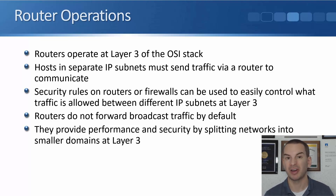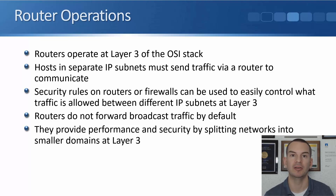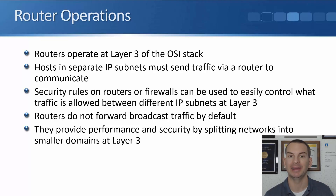Security rules on routers or firewalls can be used to easily control traffic that is allowed between different IP subnets at layer 3. For example, if all of your engineering hosts are in the 10.10.10.0/24 subnet and your accounts hosts are in 10.10.20.0/24, you can easily implement security rules on a router or firewall to block traffic between those subnets. Routers do not forward broadcast traffic by default, providing performance and security by splitting networks into smaller domains at layer 3.